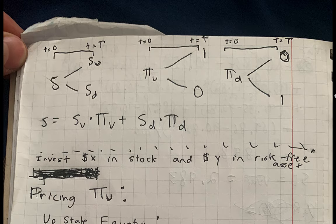This is a video about arrow securities in the binary model. Here you have a stock with price s. There's an up state and a down state in the binary model, so s either goes up to s_u or down to s_d, where s_u is greater than s and s_d is less than s. The stock starts at time zero and ends at time capital T.